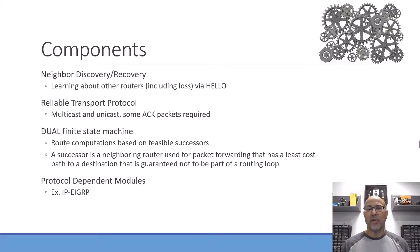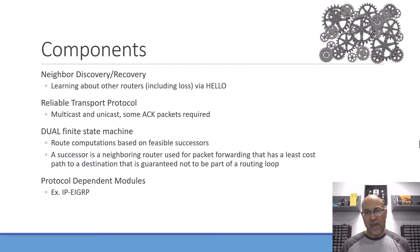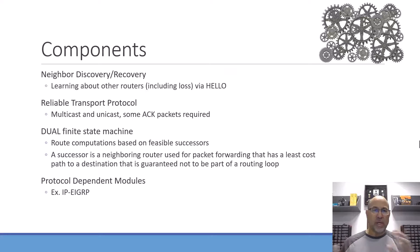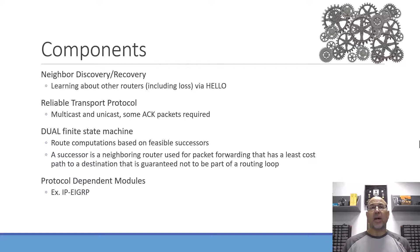There are some important components to the operation of EIGRP. First, neighbor discovery and recovery, accomplished via the hello message. We see similar behavior in OSPF: a link state router comes up and blasts out a multicast message, then another router wanting to do OSPF responds, they agree to exchange information, and that is neighbor discovery.